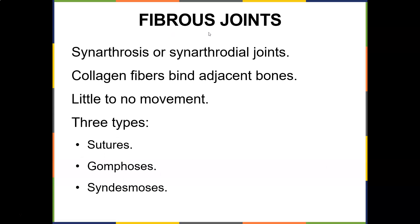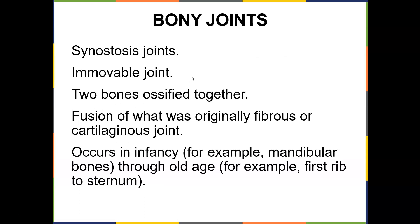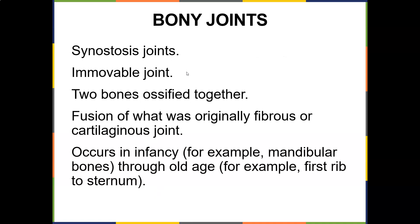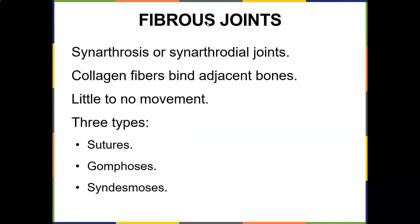Fibrous joints, which are synarthrosis or synarthroidal joints, are where collagen fibers bind the adjacent bones. They don't have much movement. There are three types: sutures, gomphosis, and syndesmosis. So you have bony joints first — which don't move at all — then fibrous joints, where there's a little bit of movement, with those three subdivisions.